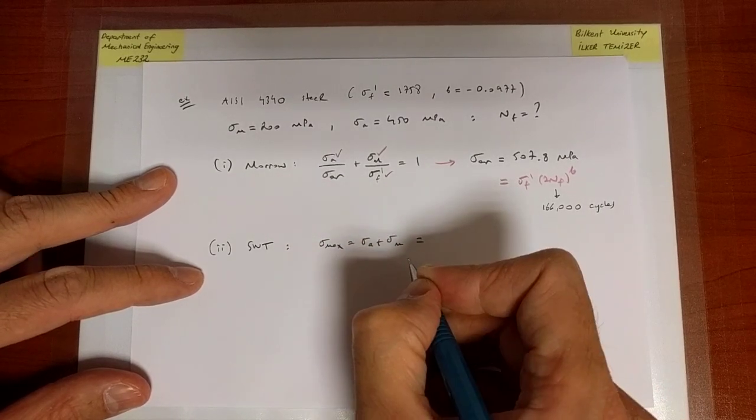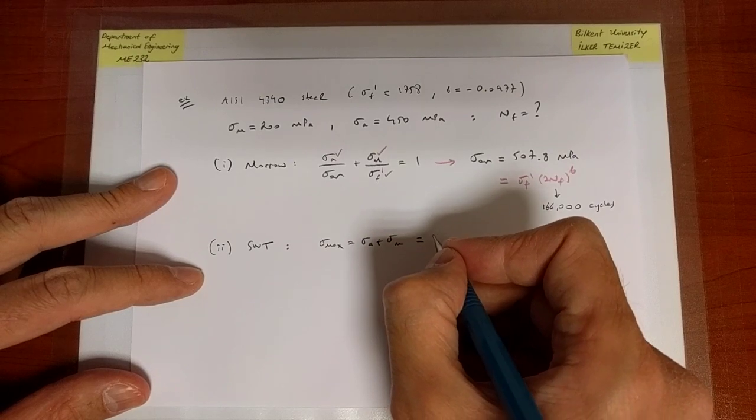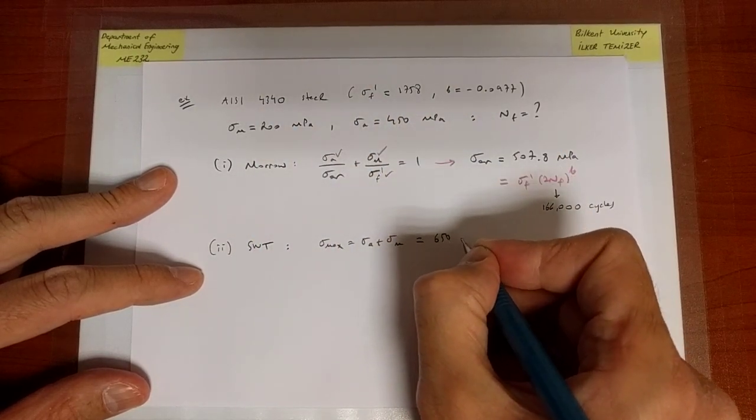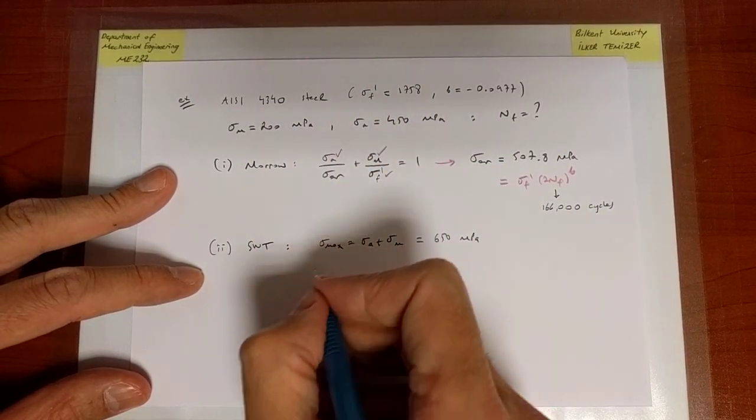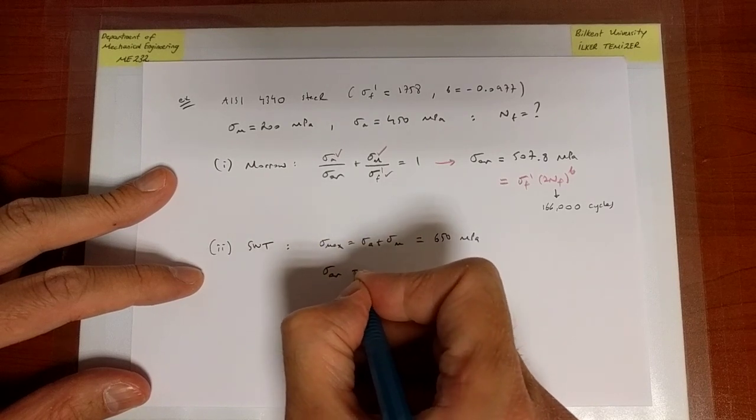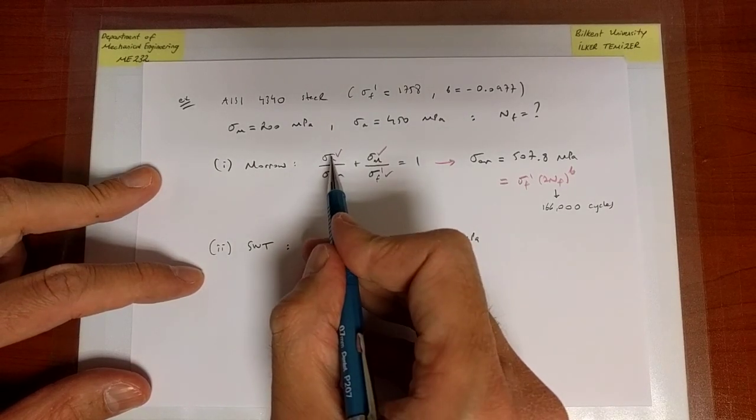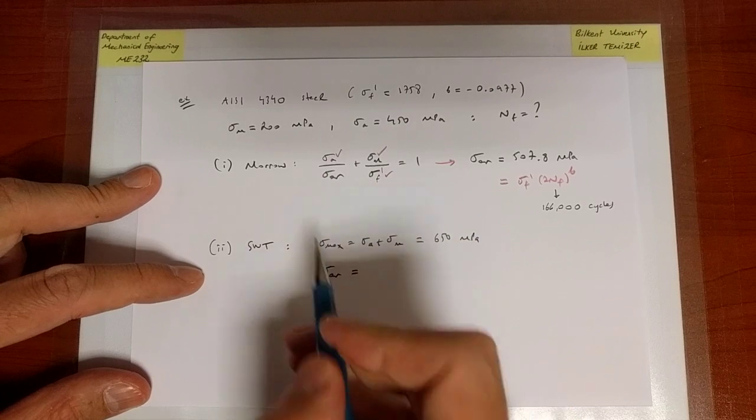There is going to be a sigma max, which is sum of the mean and the alternating stress. So that's 650 MPa.